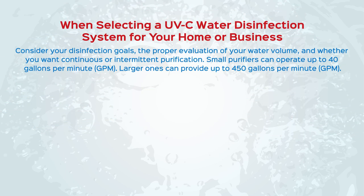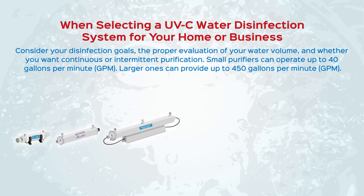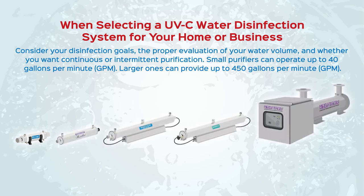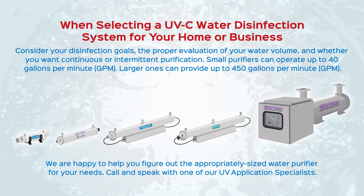When selecting a UVC water disinfection system for your home or business, consider your disinfection goals, the proper evaluation of your water volume, and whether you want continuous or intermittent purification. Small purifiers can operate up to 40 gallons per minute; larger ones can provide up to 450 gallons per minute. Call and speak with one of our UV application specialists.